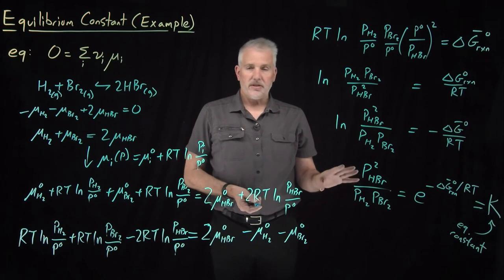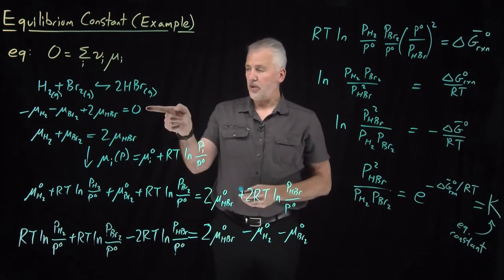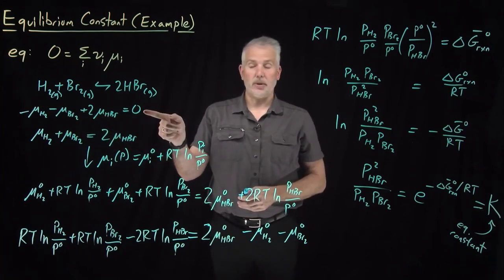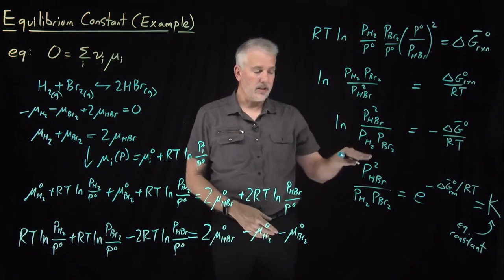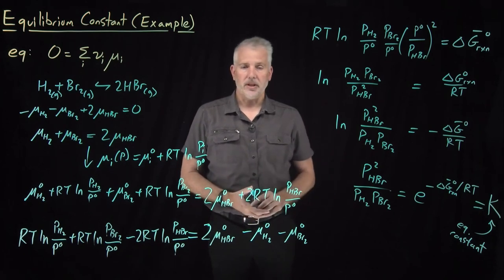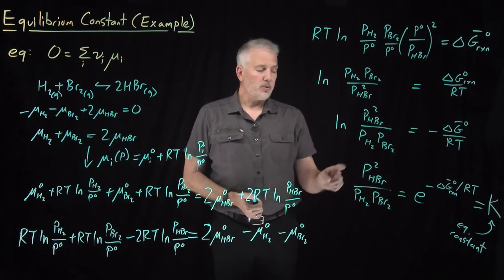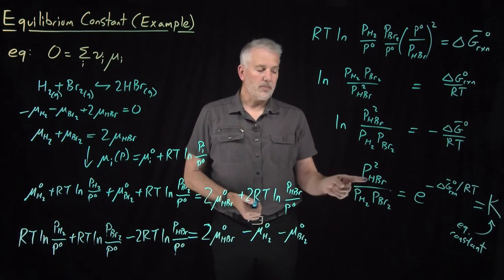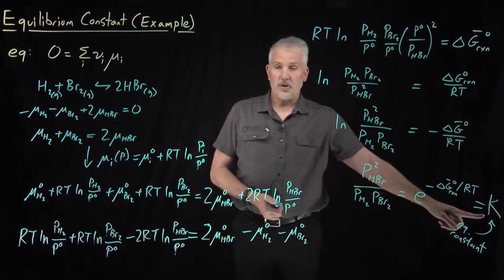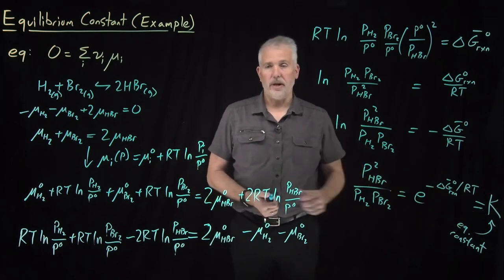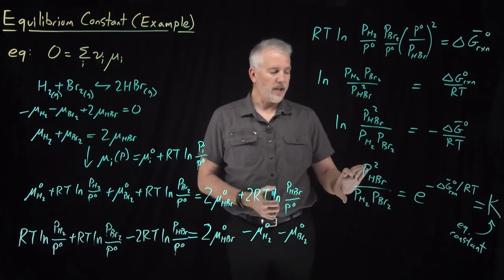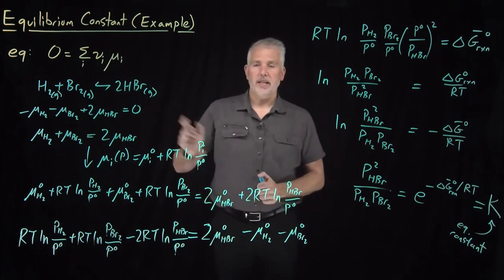This expression is still the equilibrium condition — we started with the condition that must be satisfied if the reaction is at equilibrium, and we've manipulated it to arrive at this result, which looks very different but is still the same condition. If the ratio of pressures P_HBr²/(P_H₂·P_Br₂) equals this constant, then the reaction is at equilibrium — H₂ and Br₂ are in equilibrium with HBr.